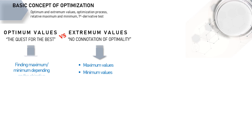Depending on the objective, the optimum value can be a maximum value — just like when we would like to maximize our rewards, our profit, or our contribution for example. We can also have a minimum value as our objective — for instance, we may want to minimize our cost or our waste disposal.